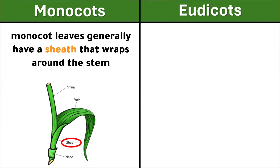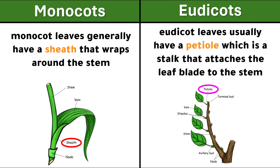Monocot leaves generally have a sheath that wraps around the stem. Eudicot leaves usually have a petiole, which is a stalk that attaches the leaf blade to the stem.